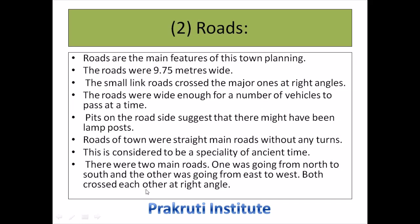Roads are the main feature of this town planning. The roads were 9.75 meters wide. Small link roads crossed the major ones at right angles. Roads were wide enough for a number of vehicles to pass at a time. Pits on the roadside suggest that lamp posts must have been placed there. Roads of the town were straight main roads without any turns, which is considered a specialty of ancient times. There were two main roads in this city — one going from north to south and the other from east to west — crossing each other at right angles.